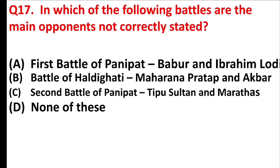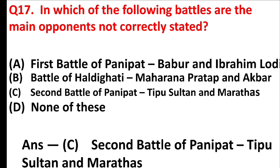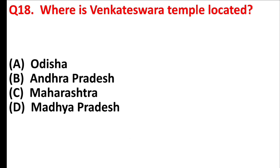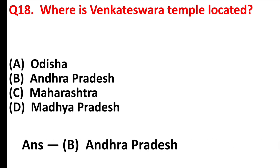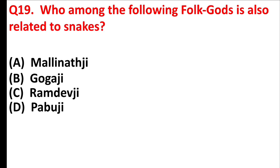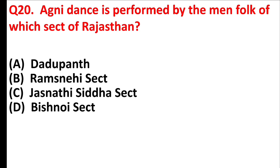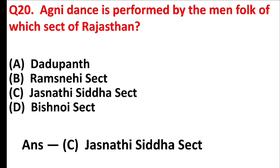In which of the following battles are the main opponents not correctly stated? Answer is Option C: Second Battle of Panipat — Tipu Sultan and Marathas is incorrect; the Second Battle of Panipat actually took place between Akbar and Hemu. Where is Venkateswara temple located? Answer is Option B: Andhra Pradesh. Which of the following folk gods is also related to snakes? Answer is Option B: Goga Ji. Agni dance is performed by the folk of which sect of Rajasthan? Answer is Option C: Jasnathi Siddha sect.